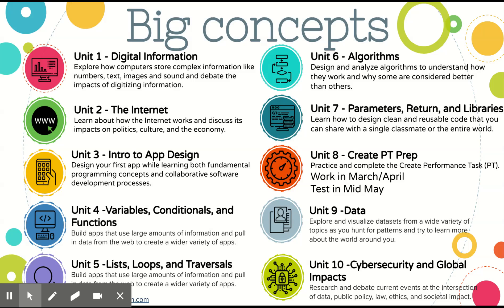There are 10 big concepts that we cover. I'm not going to read all of these — you can go back and look at them — but we move from what is digital information, into how does the internet work, into really basic app design. That gets more and more complex through units four, five, six, and seven. By the time we get to unit eight, we're working on the AP portfolio that we submit to the College Board to get your AP credit, which we work on in March and April. Unit nine is on data, and unit ten is on cybersecurity and global impacts. As we go through those units there's a technical component where we're building things, but also a broader social side where we do some research — which is where the social science part of me is really delighted.